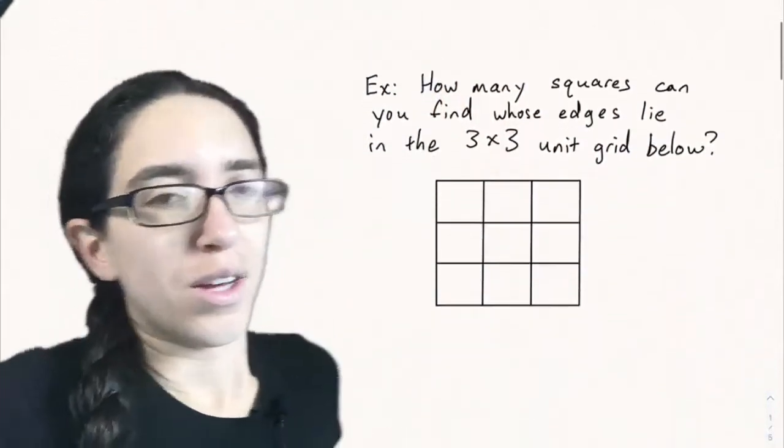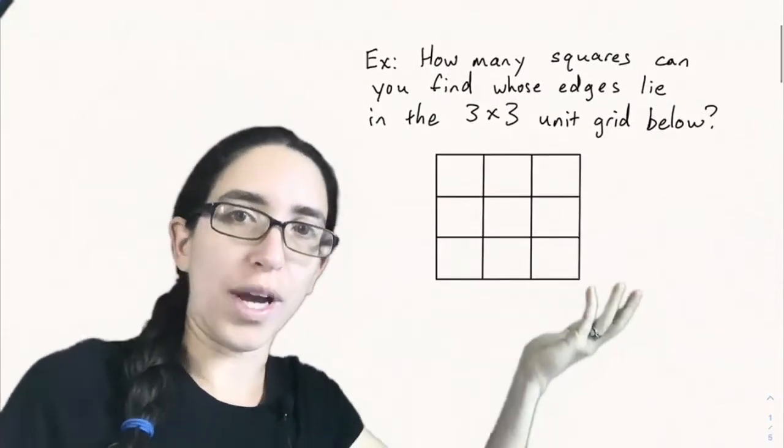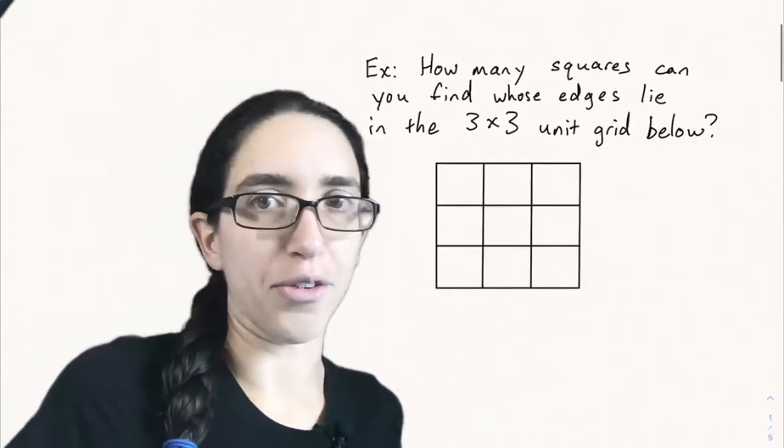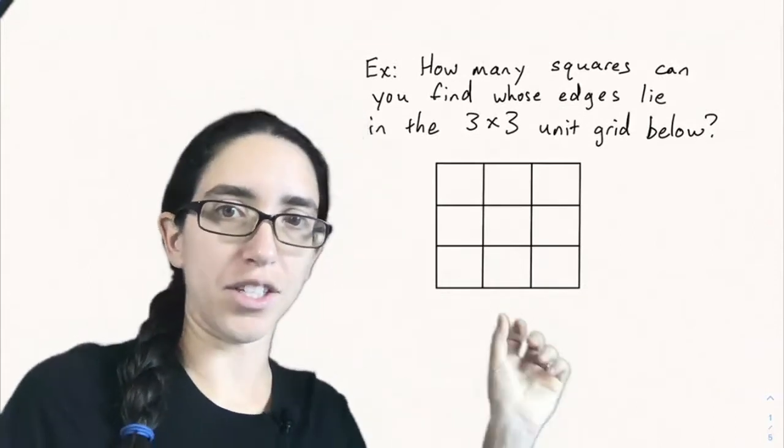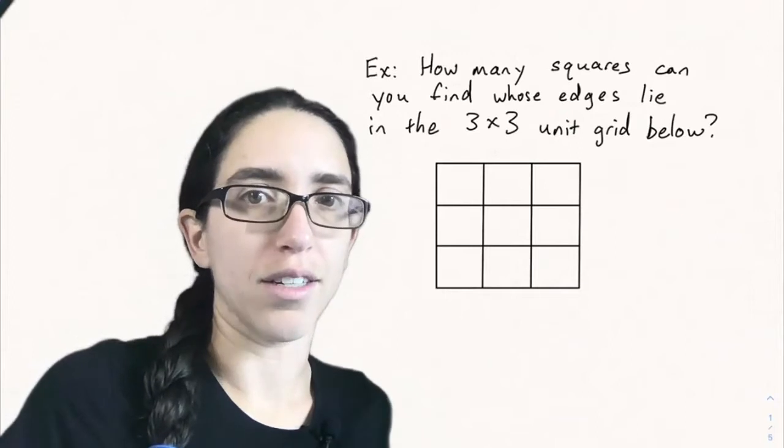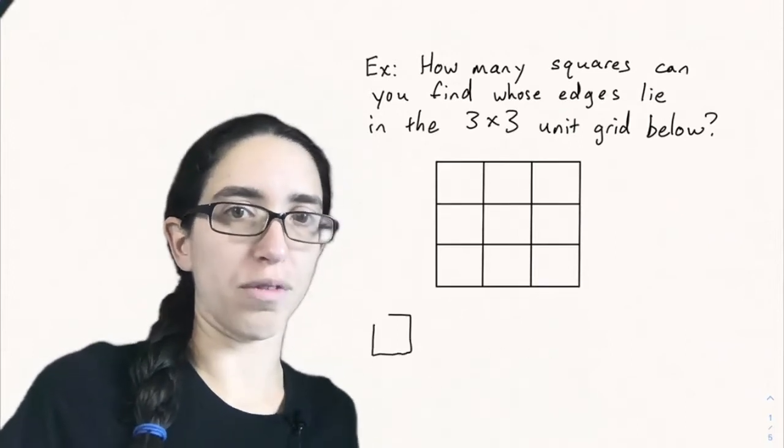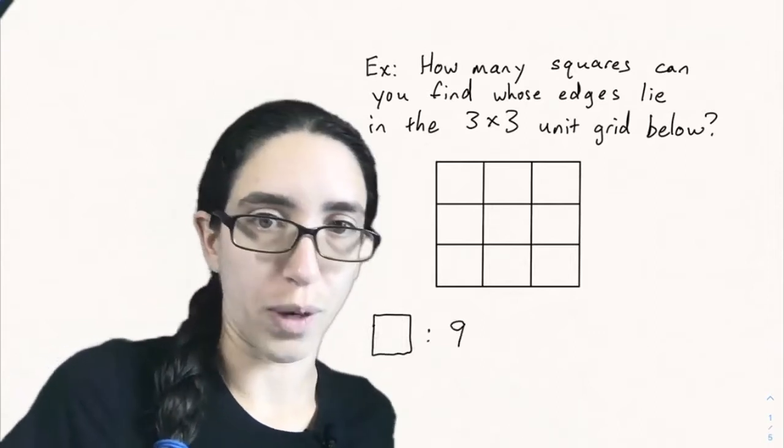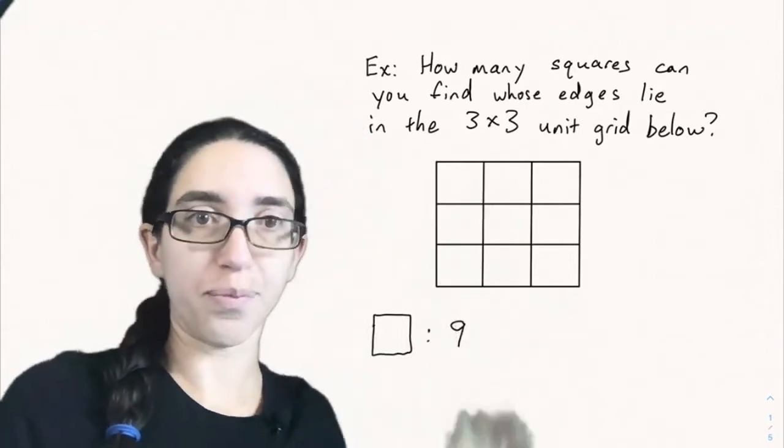And let's look at some other examples of where the addition principle comes up now. For example, what if we wanted to count the number of squares that you can find by tracing out edges on this three by three unit grid. So each of these little squares we're assuming is a one by one square, and we want to find how many squares can we find in total. Well first let's count the one by one squares. There are nine of them if you just count them.